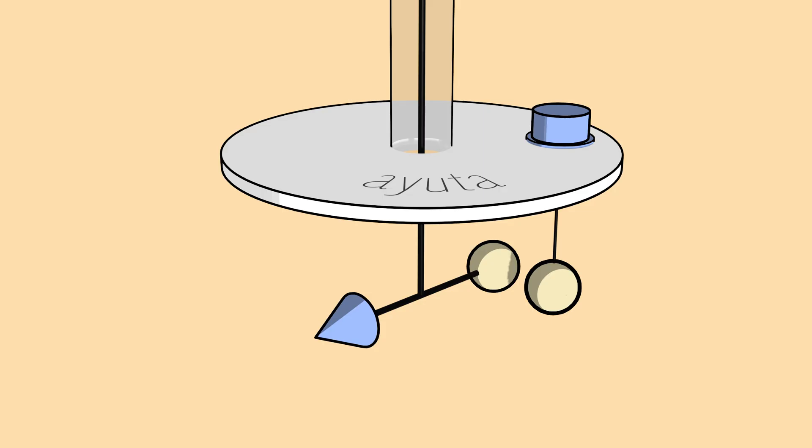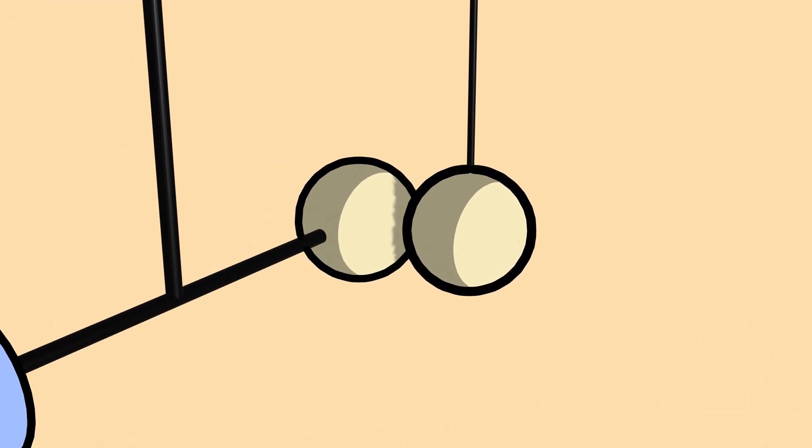First, ensure both spheres are neutral by grounding them. Charge a glass rod with silk. Touch it to the fixed sphere. Then let the two spheres kiss briefly. Now each carries an equal charge, let's call it Q. The stage is set.